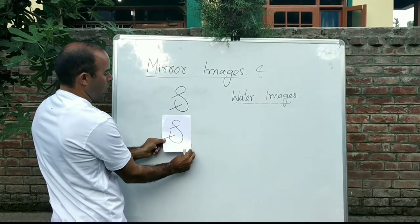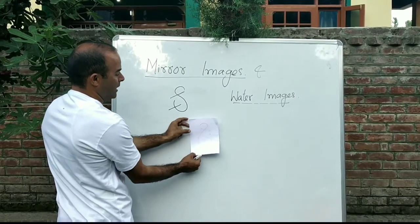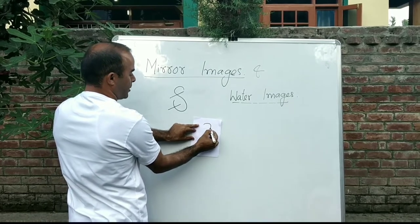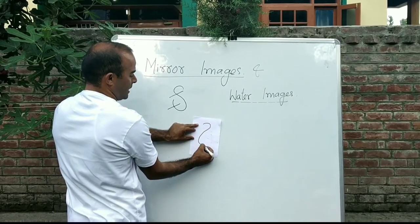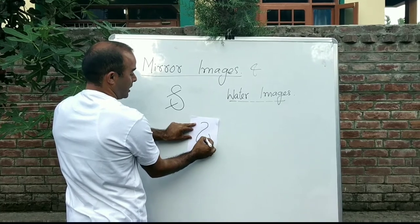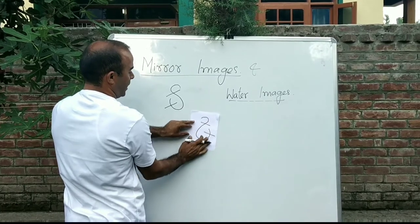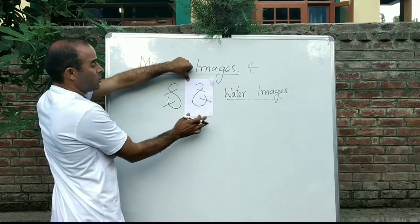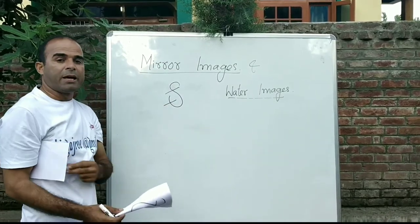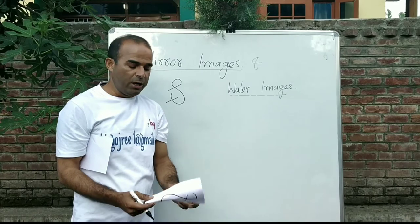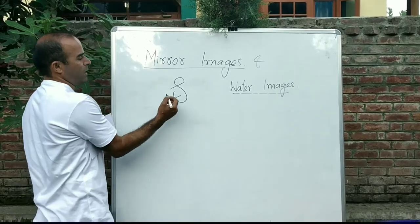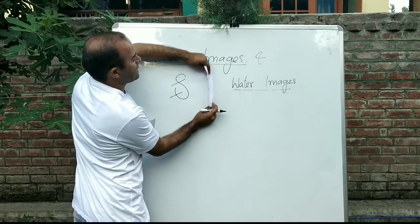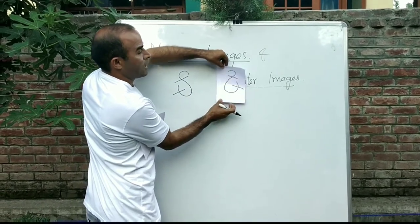Horizontally — simply, if that figure is to be a mirror image, we will draw it on paper. We will make this figure on paper, and if you observe this figure, you will see the mirror image.